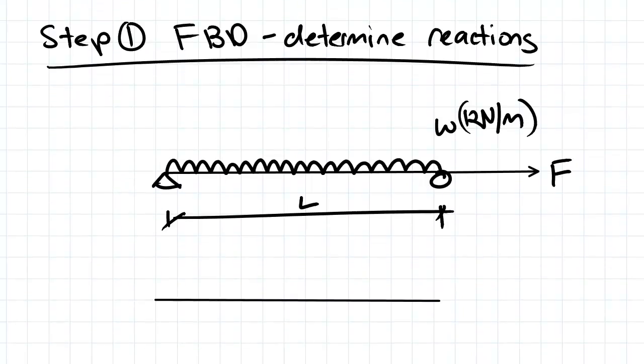So first I just wanted to go through the steps that we use to determine the AFD, BMD and the SFD for a certain beam. The first step is to determine the reactions. When you get a beam, you want to replace these supports here with the equivalent reactions that they have. So here, we've got a UDL acting with a load of delta.